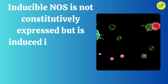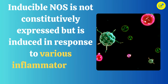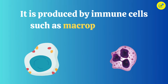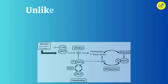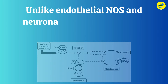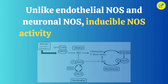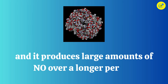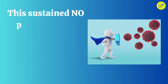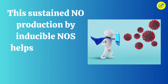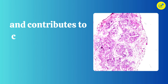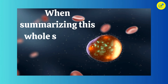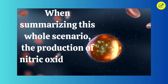The final type is inducible NOS. Inducible NOS is not constitutively expressed, but is induced in response to various inflammatory and immune responses. It is produced by immune cells such as macrophages and neutrophils. Unlike endothelial NOS and neuronal NOS, inducible NOS activity is not tightly regulated, and it produces large amounts of NO over a longer period.